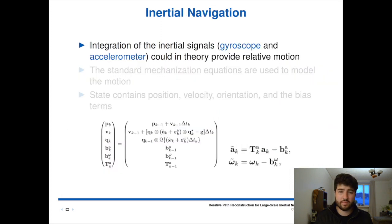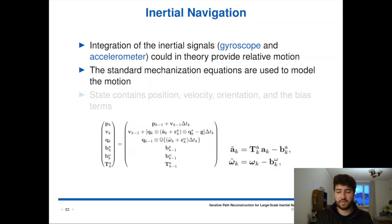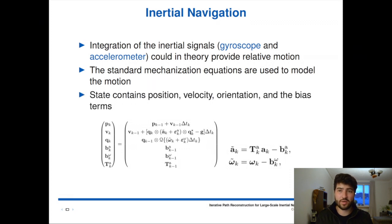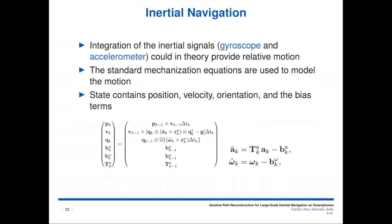Let's start with basic inertial navigation. Integration of the inertial signals through the IMU provides relative motion. We have implemented this in the classic mechanization equations, where you can see our state contains position, velocity, and orientation, and the bias terms of the sensors — which is very important. Note that the bias terms in the state are what makes this a good candidate for a global iterated filter.